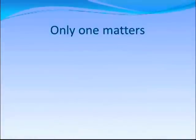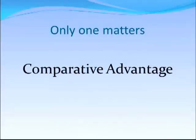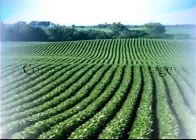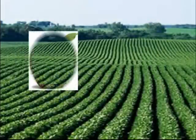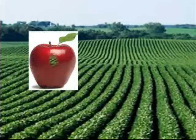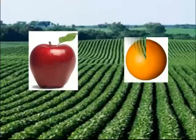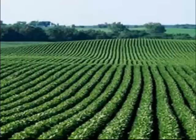But only one of these matters when you're doing these kinds of problems, and that is comparative advantage. So let's look at a farm where you could produce two crops — apples and oranges, both of which can be grown on this farm.